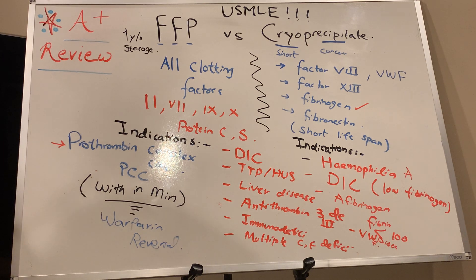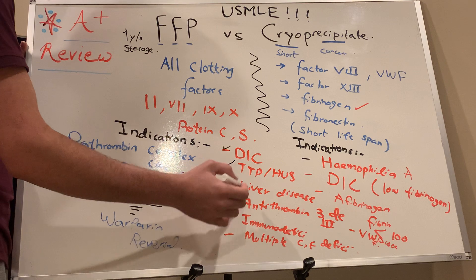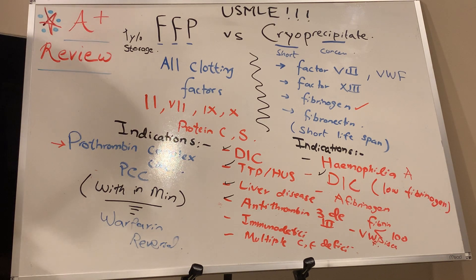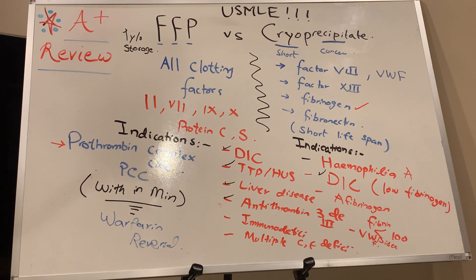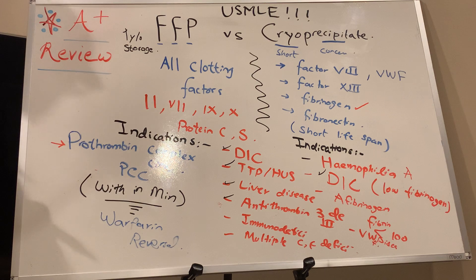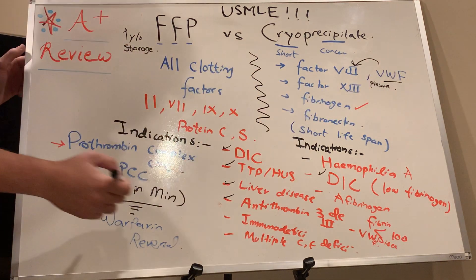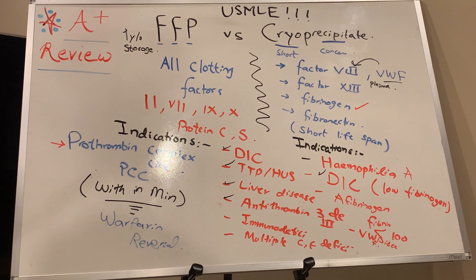These are the high-yield points for the exam — DIC, TTP, HUS, antithrombin 3 deficiency are commonly tested. Regarding factor 8 versus von Willebrand factor: they are structurally similar but different products. Von Willebrand factor serves a dual function — it is the carrier for factor 8 in plasma and promotes platelet adhesion and platelet-to-platelet cohesion during thrombus formation. Factor 8 deficiency corresponds to hemophilia A; von Willebrand factor deficiency corresponds to von Willebrand's disease.